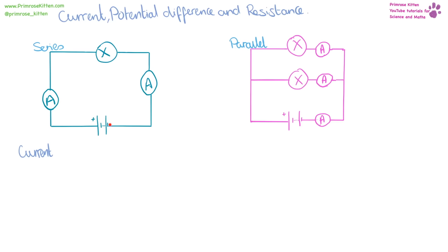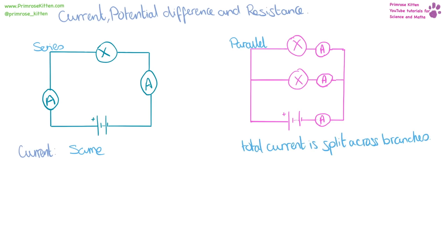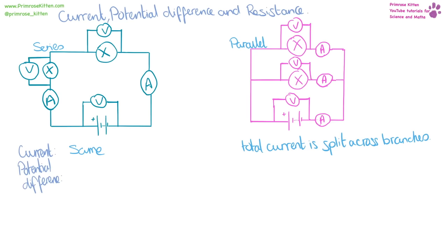We can think of current as electrons moving around a circuit. In a series circuit they all move through the same path, so wherever we look the current is going to be the same. In a parallel circuit, the current that comes out of the battery passes the first ammeter, then when it reaches a junction it has two choices — so the current gets split. Potential difference measured by a voltmeter around the battery is split across the components in a series circuit.